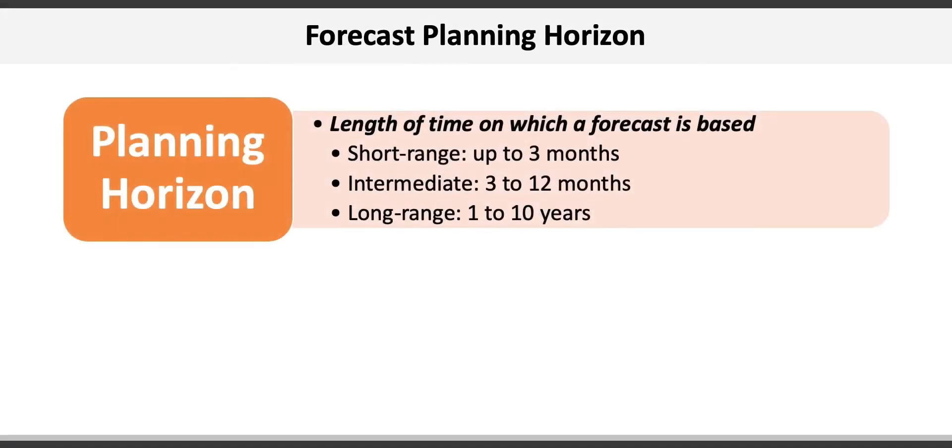Forecasting can be done for a number of planning horizons. A planning horizon is simply the length of time in which a forecast is based, and there are generally three planning horizons. There's short term, which is typically up to three months out, intermediate, which is typically between 3 and 12 months, and long-range forecasts that look up to 10 years or more into the future.